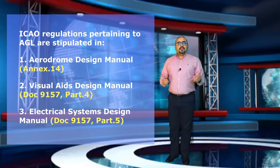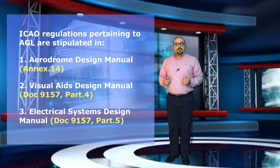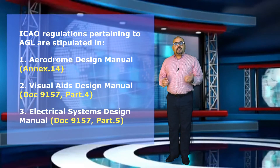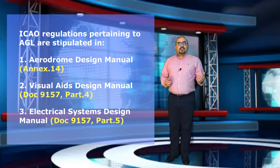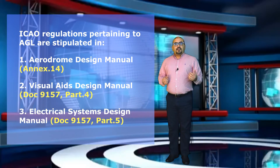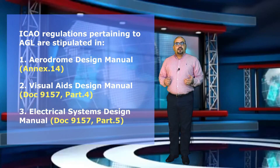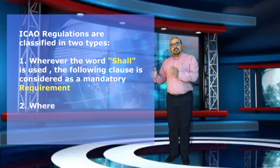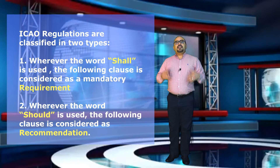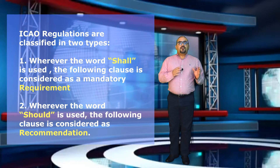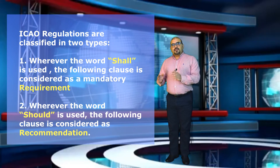The ICAO regulations pertaining to the AGL systems are stipulated in three documents. The first document is the Aerodrome Design Manual Annex 14. The second document is the Visual Aids Design Manual, Document 9157. ICAO regulations are classified in two types: wherever the word 'shall' is used, the following clause is considered a mandatory requirement, while wherever the word 'should' is used, the following clause is considered a recommendation.